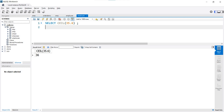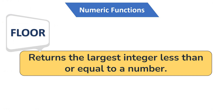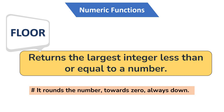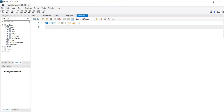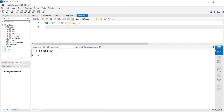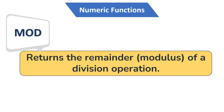Our next numeric function is FLOOR. The FLOOR function returns the largest integer which is less than or equal to the specific number. Unlike the CEIL function, this function rounds a number towards zero and always goes down. Its syntax is also the same as the CEIL function. After executing the same example using FLOOR, our output is 35, which is the largest integer less than 35.6.